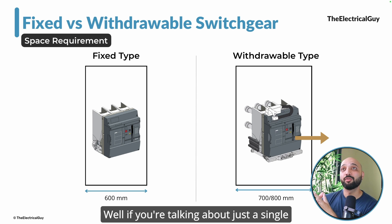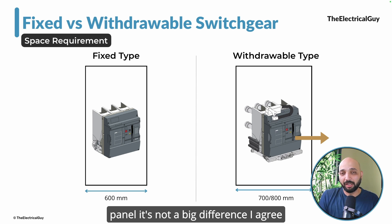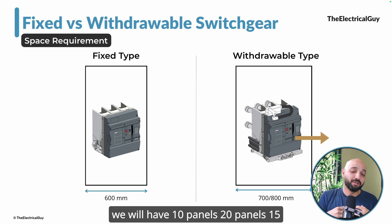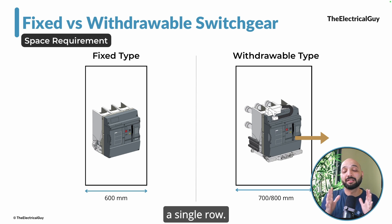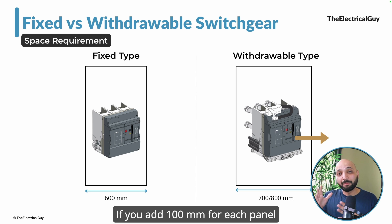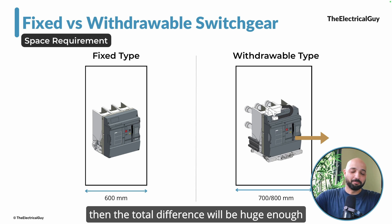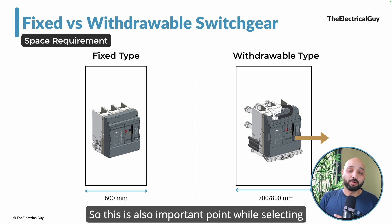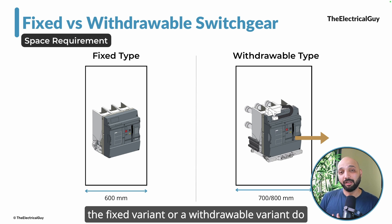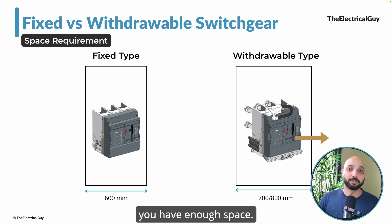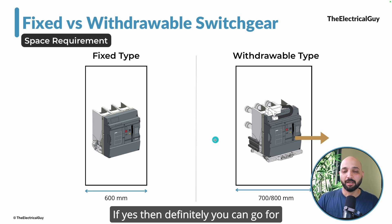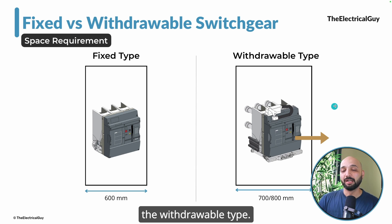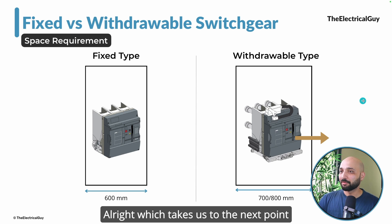For a single panel the difference may not be huge, but in a substation with 10, 15, or 20 panels in a row, adding 100 mm per panel means the total space difference becomes significant. Space availability is therefore an important consideration — if you have enough space, you can go for the withdrawable type.